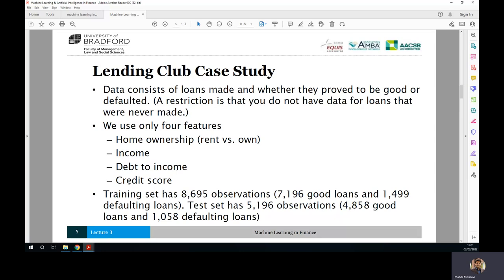So our database consists of 8,695 observations. Out of this number, 7,196 are good loans, which means that the borrower paid back, and 1,499 defaulting loans. In other words, the borrower failed to pay back the loan. So we have got 8,695 training sets, 5,196 observations, and yes, for the test set, which includes 4,858 good loans and 1,058 default loans.